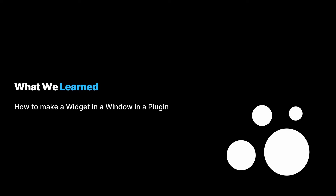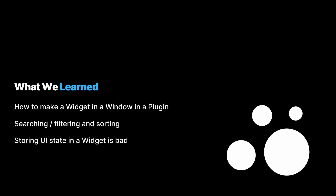So what did we learn from the Audio Inspector? The first big thing was how to make a widget in a window in a plugin that was useful for people — a good direction to keep following. We also learned that searching, filtering, and sorting things in the inspectors we build is absolutely crucial — not a nice-to-have. You have so much information that you need to be able to filter down into what you need. We also learned that storing UI state inside the widget code itself is not a good idea — it makes life harder for developers to iterate on and limits flexibility.